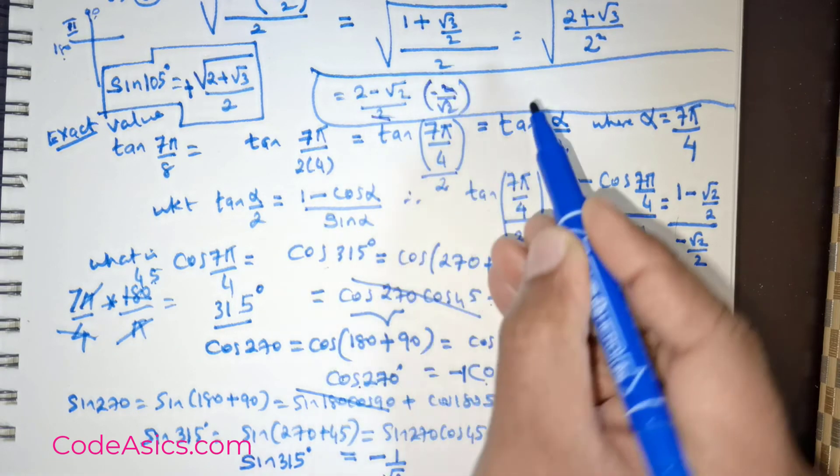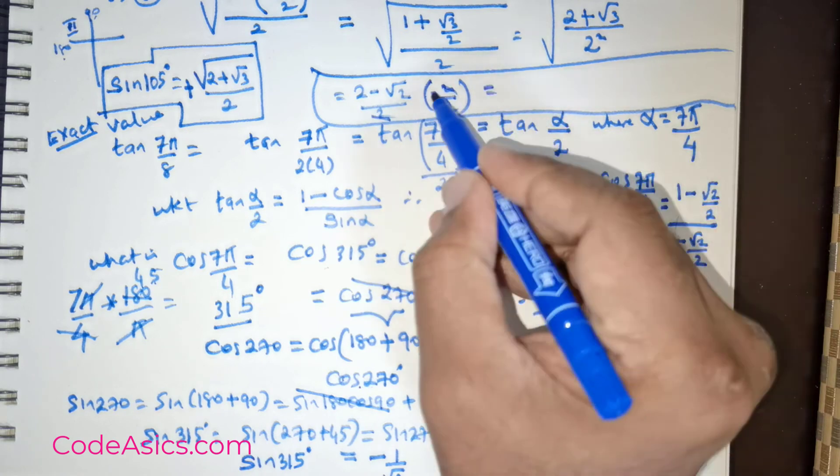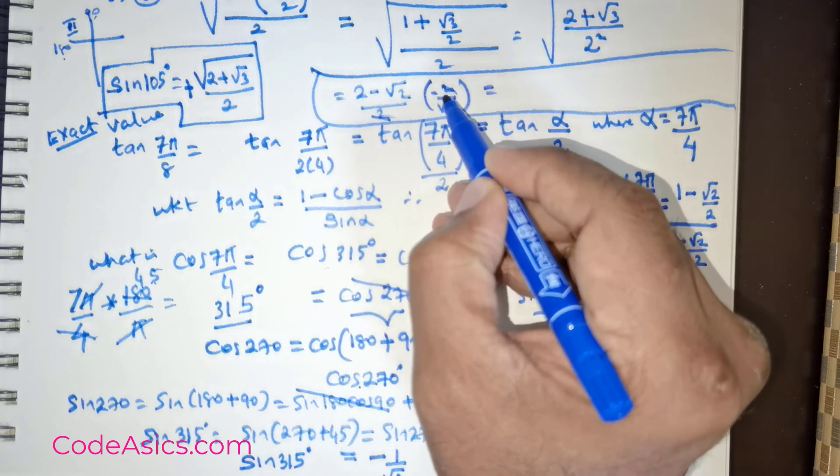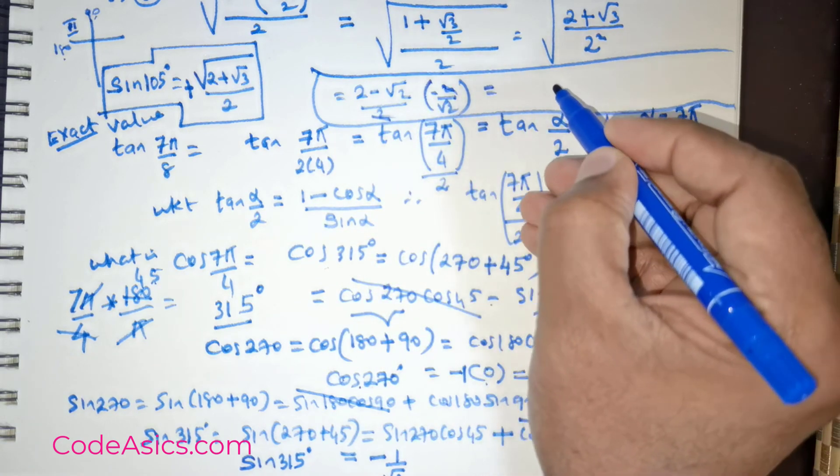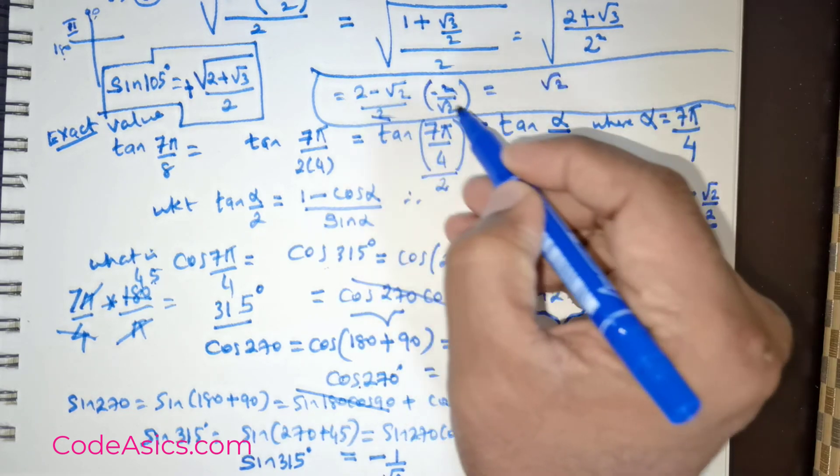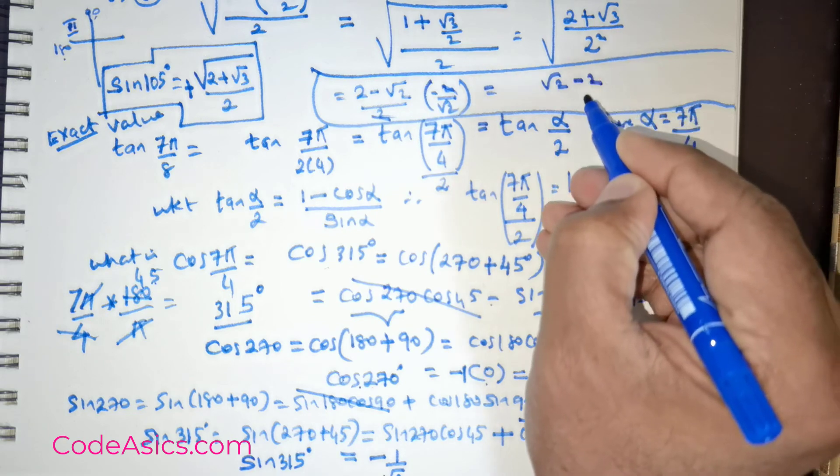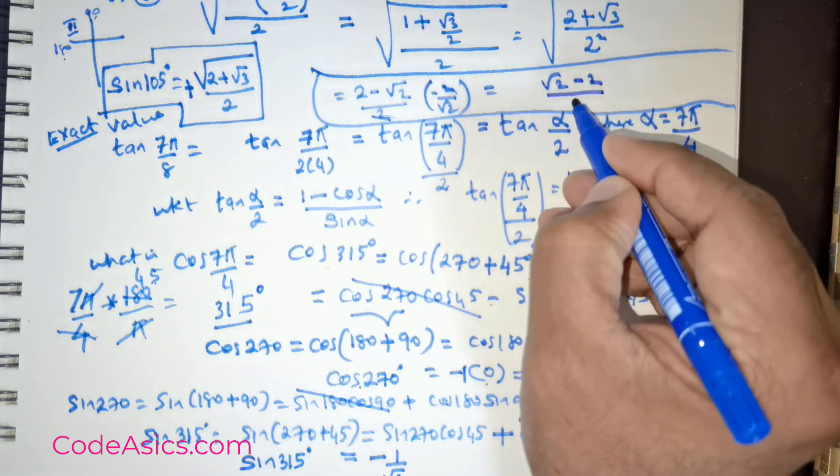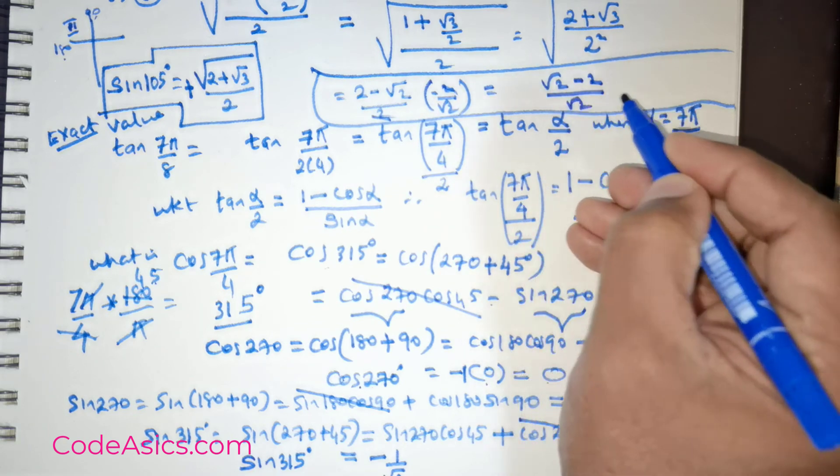So this 2 and this 2 will get cancelled, giving me a negative sign there. Now if I were to distribute that negative sign, I would have root of 2, it will become positive, followed by a negative 2 divided by root 2. This is what I've got.